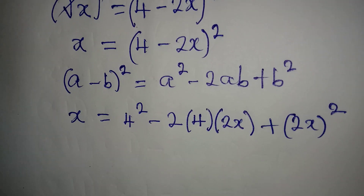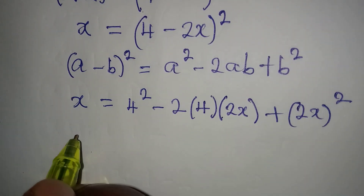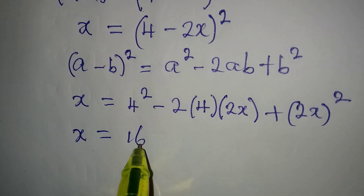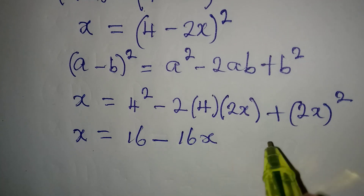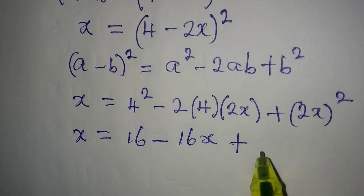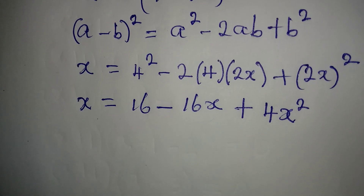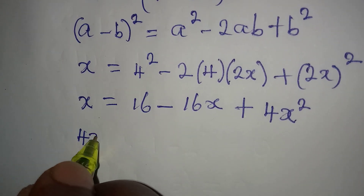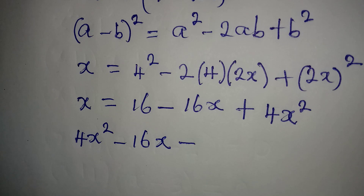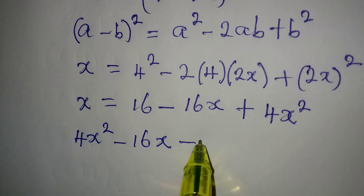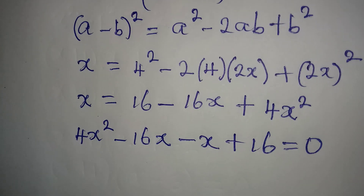The next thing is to open the brackets. We have x equal to 4 squared is 16, minus 2 times 4 is 8, and 8 times 2x gives 16x, then plus 2x squared gives 4x squared. Arranging in better order: 4x squared minus 16x, then bringing the x to the right makes it negative x, plus 16, equals 0.